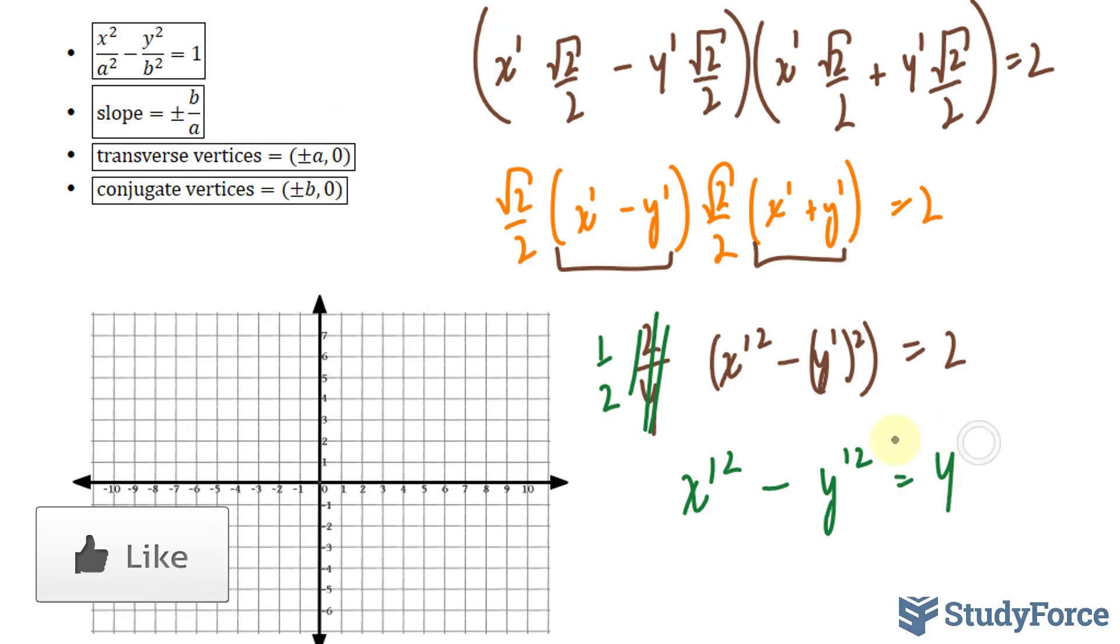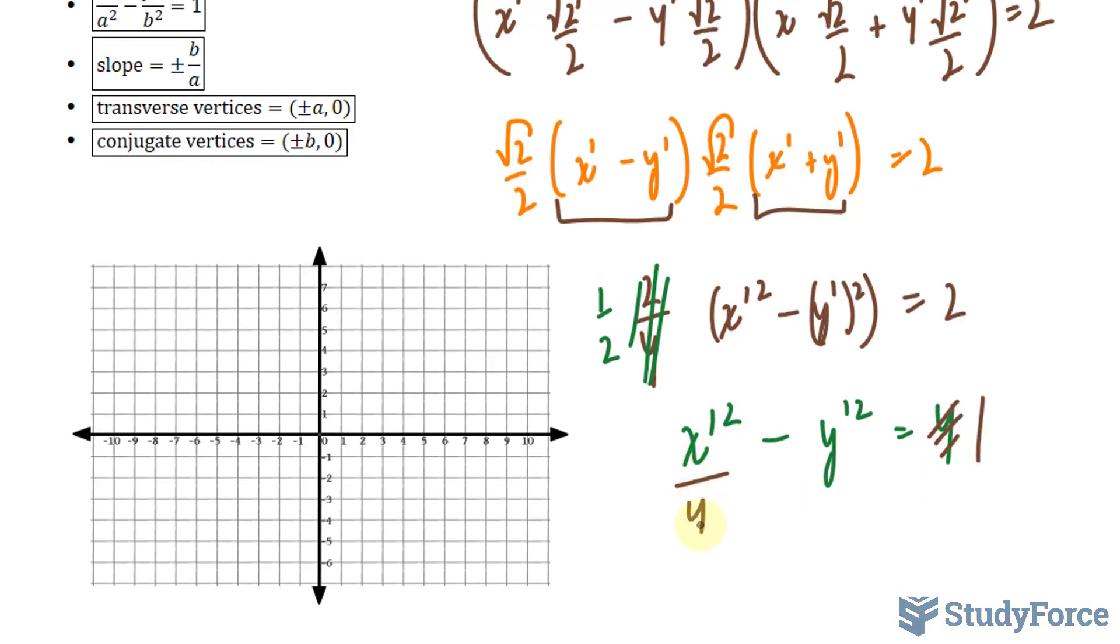And I want to make the right side of this equation equal to 1, so I'll divide everything by 4. This will make that a 1, and we'll have a 4 underneath this x and a 4 underneath this y.